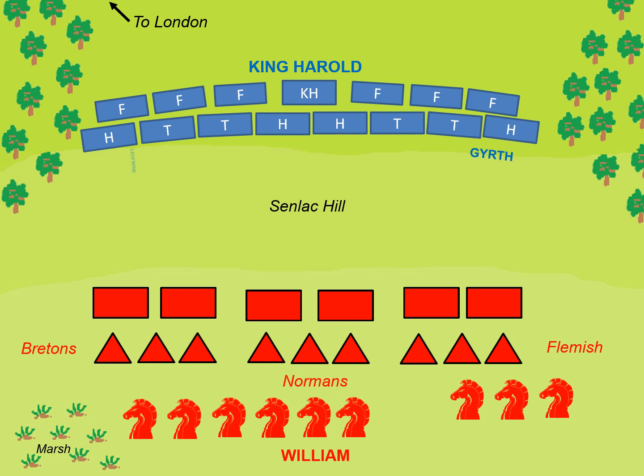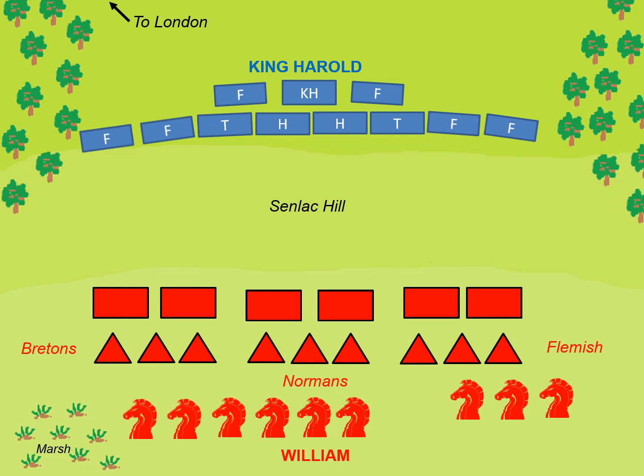Unbeknownst to William, there had been a breakdown in Saxon discipline — possibly because Leofwin and Gyrth had been killed. It was now left to less experienced thanes and huscarls to command themselves, and in places gaps had formed that were being filled by less experienced fyrd soldiers. The Norman attacks on the flanks, which is standard practice, had meant attrition and losses were highest there — and that is where William would focus his next attack.